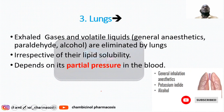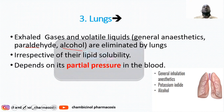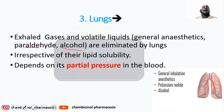Another extra-renal excretory organ is the lungs. The lungs normally excrete drugs that exist in gaseous or volatile form, especially general anesthetics like halothane and nitrous oxide, also paraldehyde and alcohol. These drugs are excreted via the exhaled air. It depends on the partial pressure or saturation of the drug in the blood — the higher the saturation, the easier it is for the drug to be excreted via exhaled air.